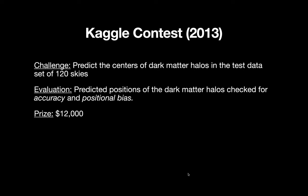And positional bias, meaning directional bias. And these two things were used to calculate some metric, some value, and the closest to zero, whoever's submission is the closest to zero, wins. And the prize money for first place is $12,000.